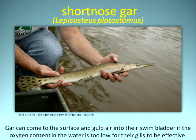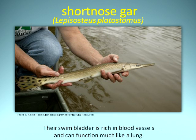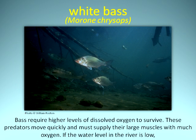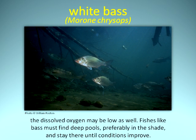Gar can come to the surface and gulp air into their swim bladder if the oxygen content in the water is too low for their gills to be effective. Their swim bladder is rich in blood vessels and can function much like a lung. Bass require higher levels of dissolved oxygen to survive. These predators move quickly and must supply their large muscles with much oxygen. If the water level in the river is low, the dissolved oxygen may be low as well. Fishes like bass must find deep pools, preferably in the shade, and stay there until conditions improve.